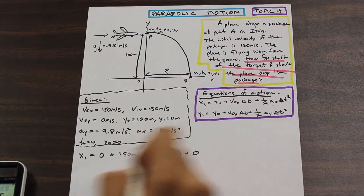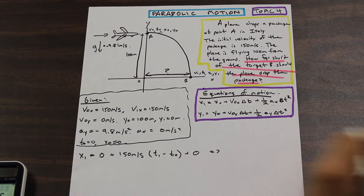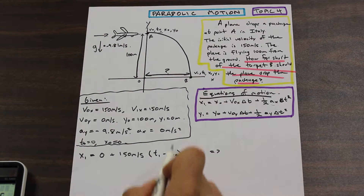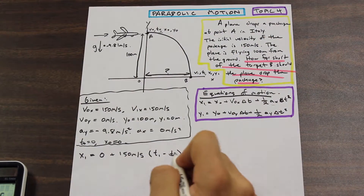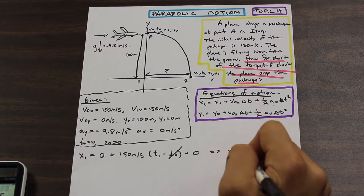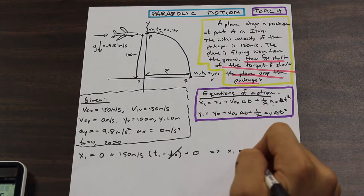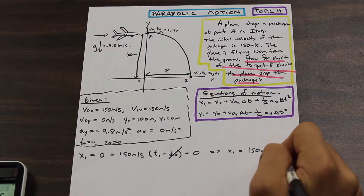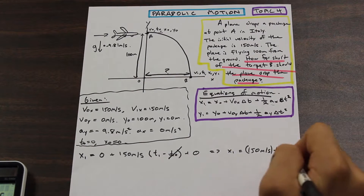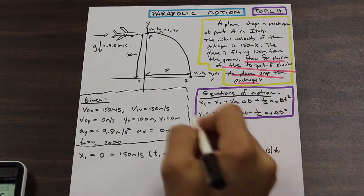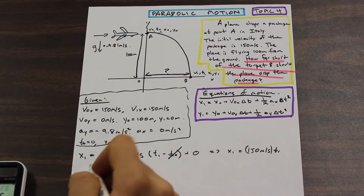So what are we left with? X-naught is zero, T-naught is zero, so we're left with: X1 = 150 meters per second times T1. Let's label that Equation 1 and move on to the y direction.